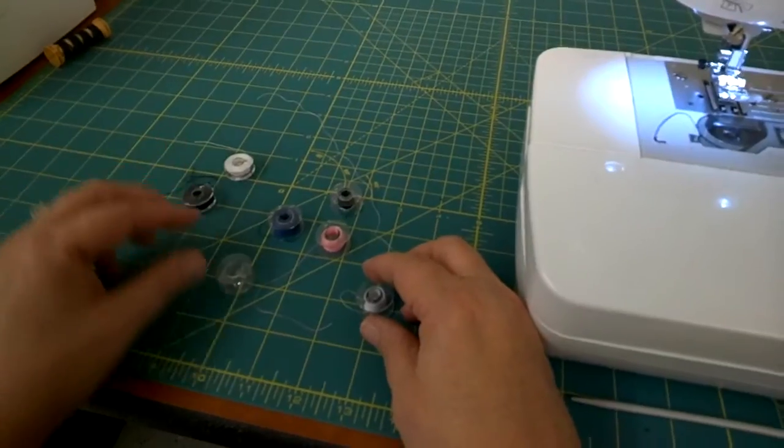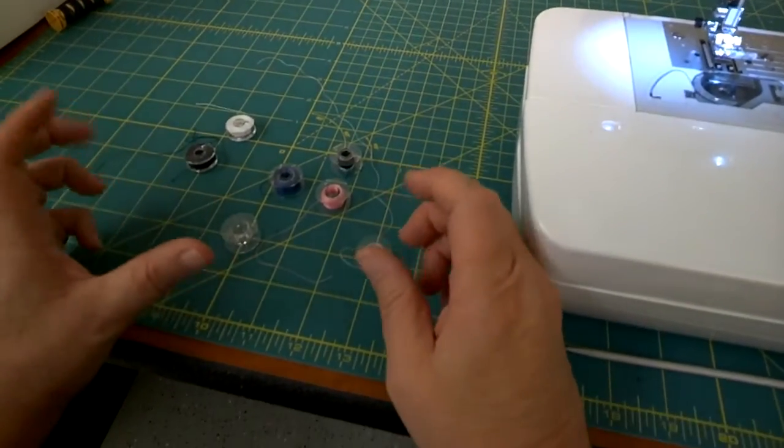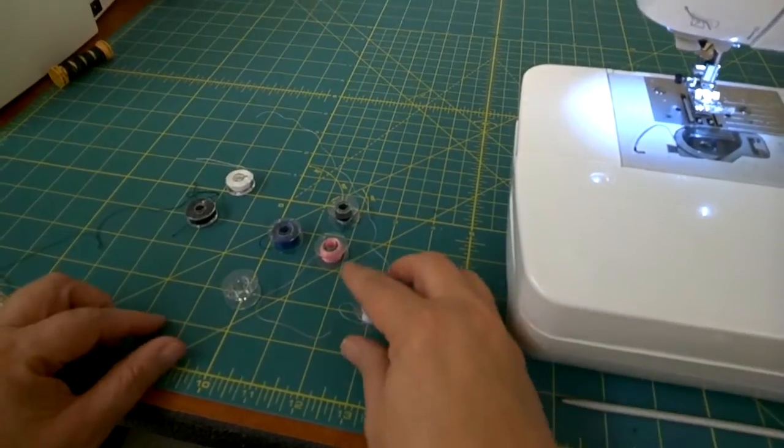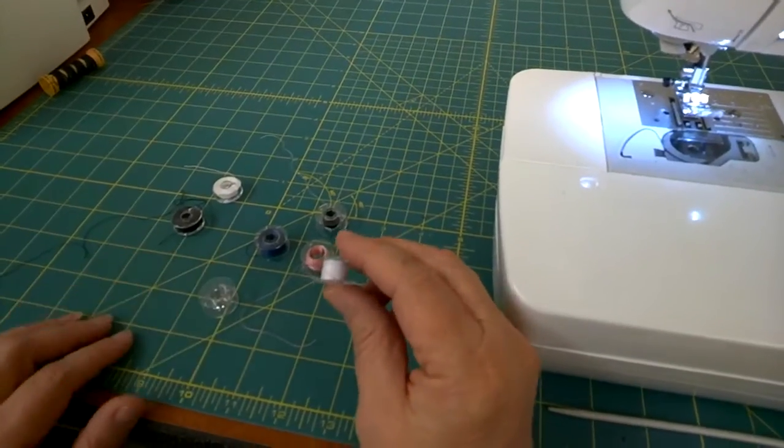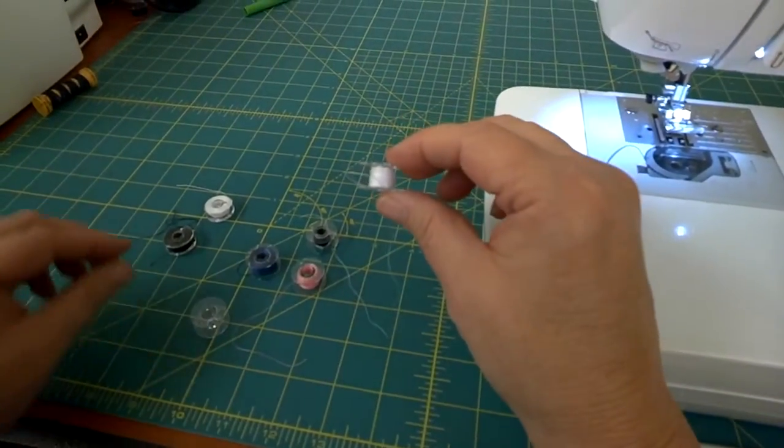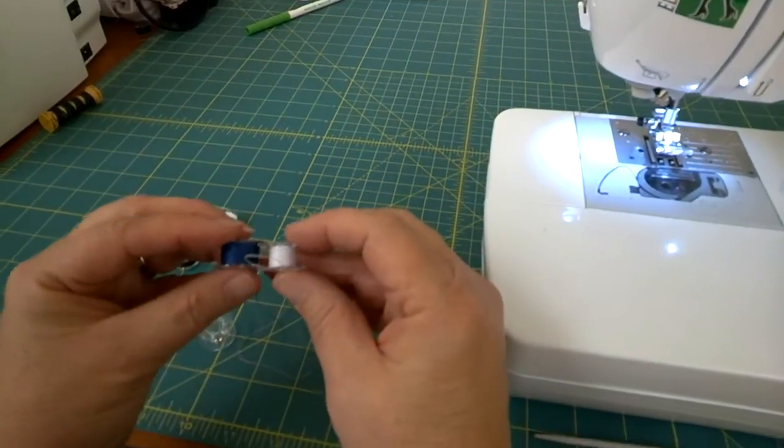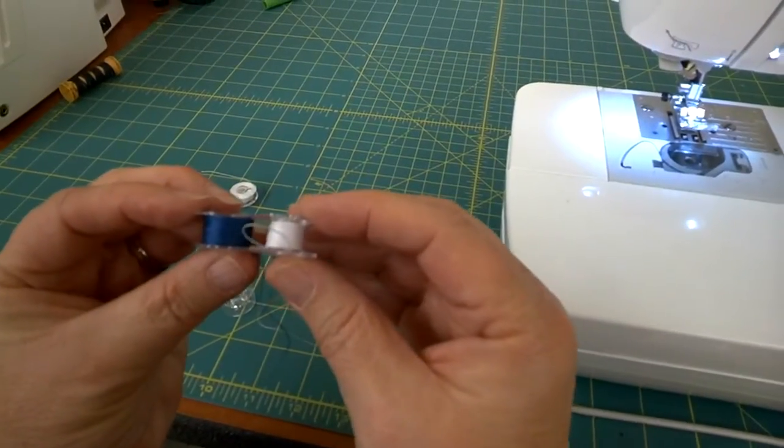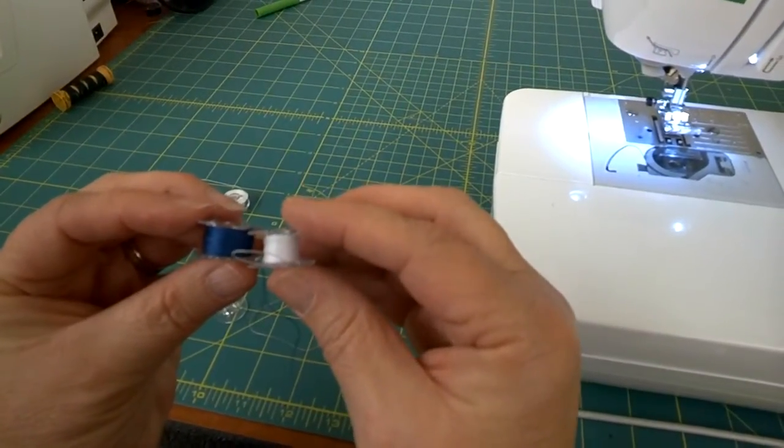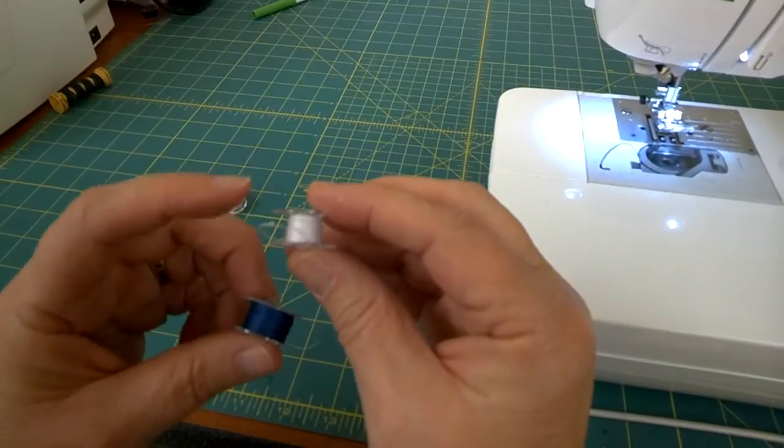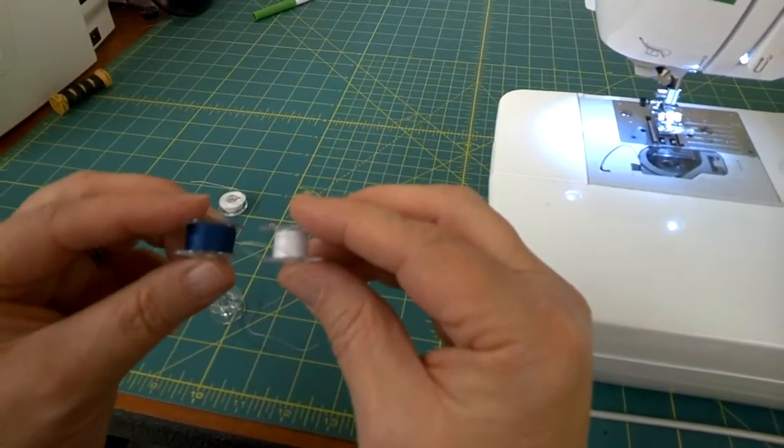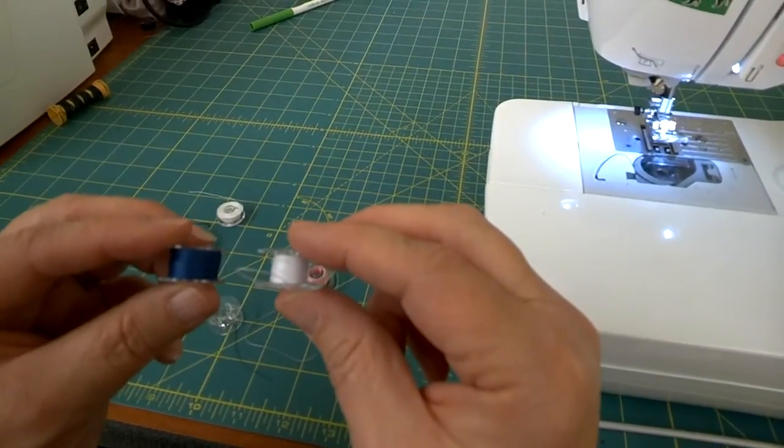When you look at several bobbins, you want to make sure you're using the correct bobbin for your sewing machine. Sewing machines come with different sized bobbins. This one and this one, if you can tell, are the same size. They're flat on the top, they're the same width through here, and they fit the Baby Lock machine.